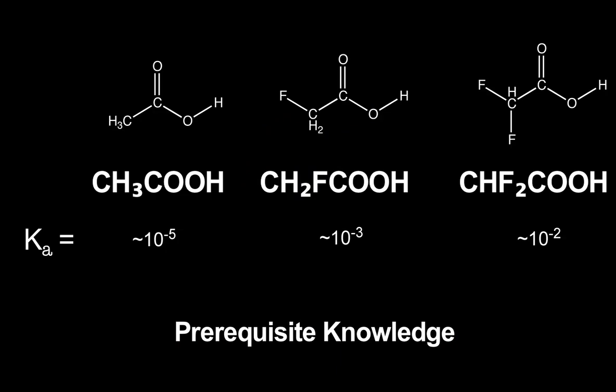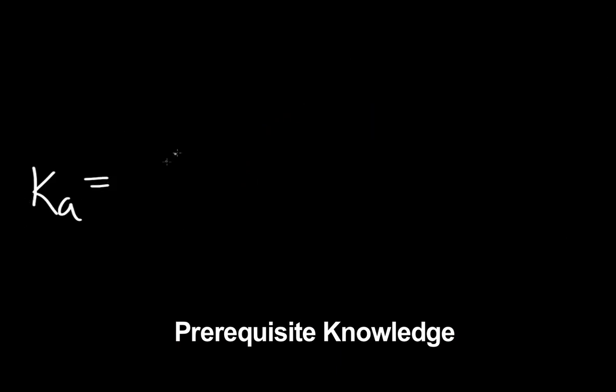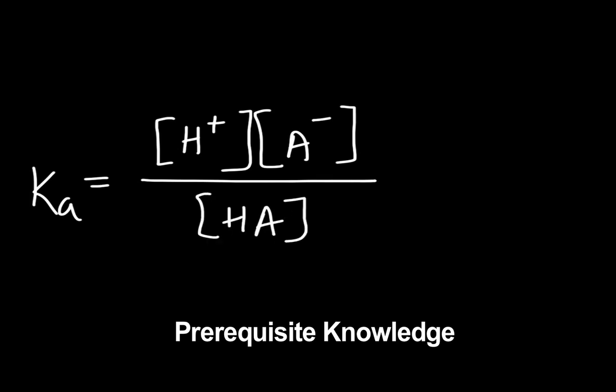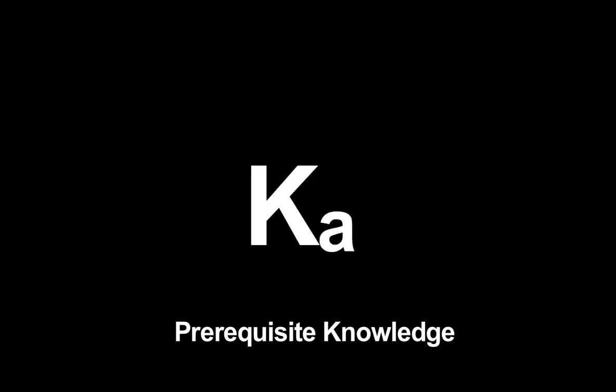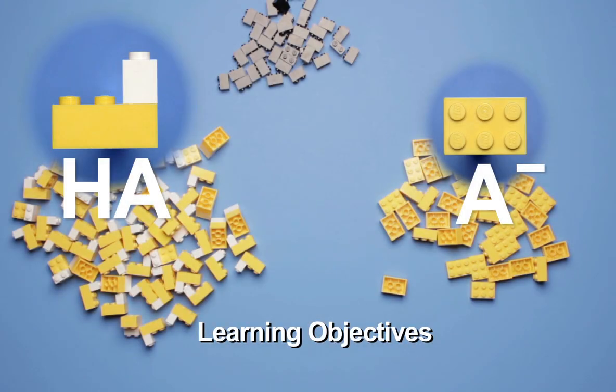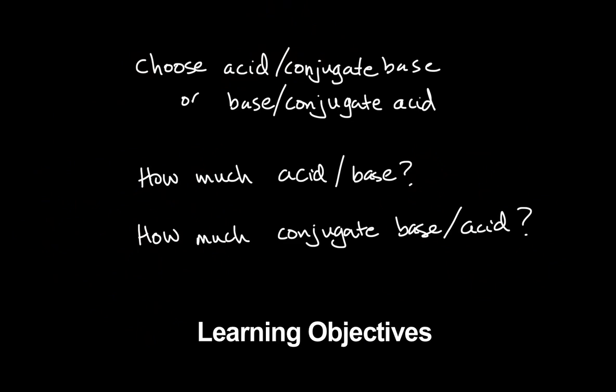Before watching this video, you should know what an acid is, what a base is, be familiar with the concept of chemical equilibria, understand what distinguishes strong acids or bases from weak acids or bases, and be able to define pH, Ka, and pKa. After watching this video, you'll be able to, one, describe how the structure or composition of a buffer functions to resist changes in pH, and two, explain how the choices made in buffer design impact the properties of a buffer.